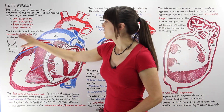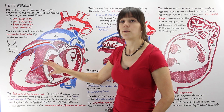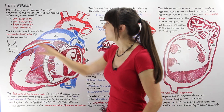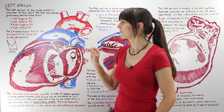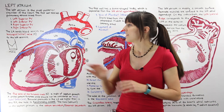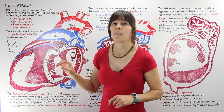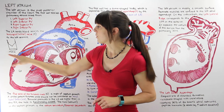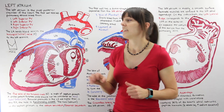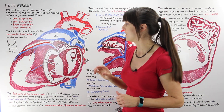From there, the left atrium sends blood across the bicuspid valve — also called the mitral valve — to the left ventricle. A fun bit of trivia: the word mitral valve got its name from the Latin word 'mitre,' which refers to the shape of a bishop's hat. I've drawn a picture of that hat here for reference.